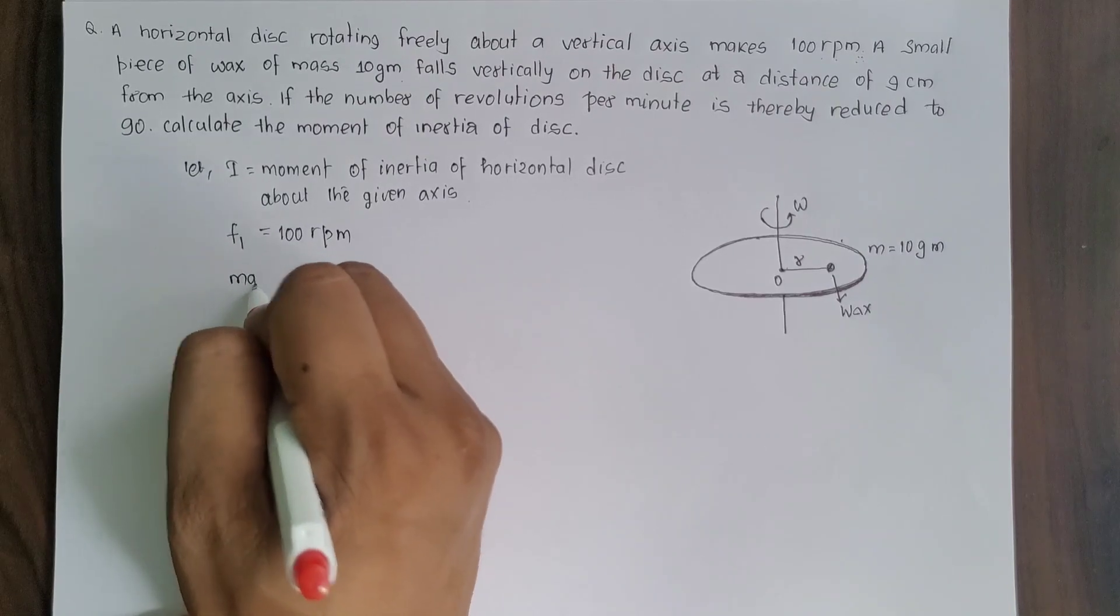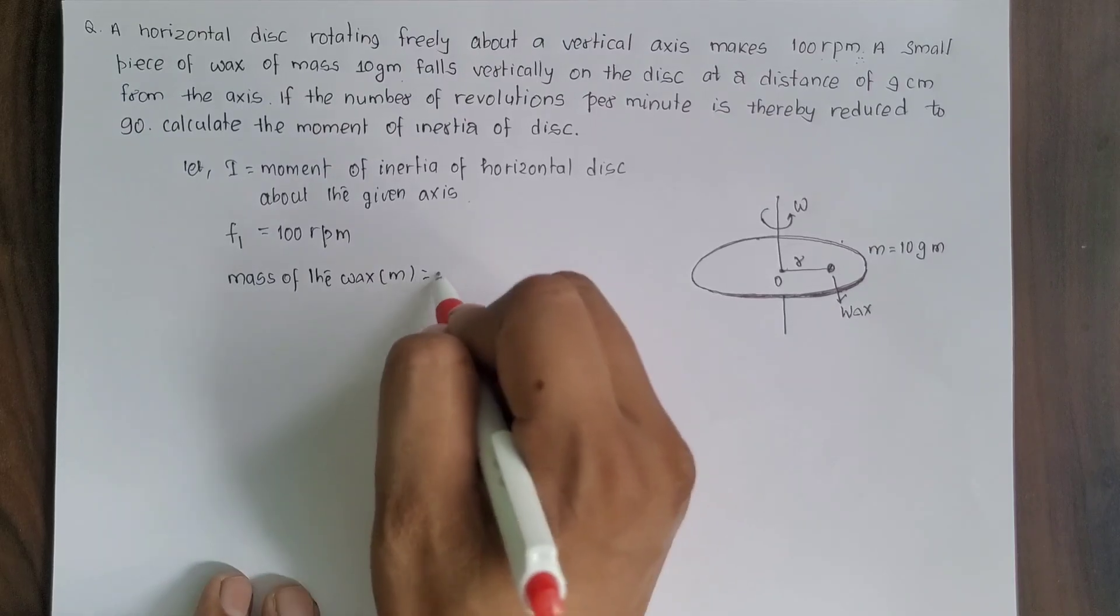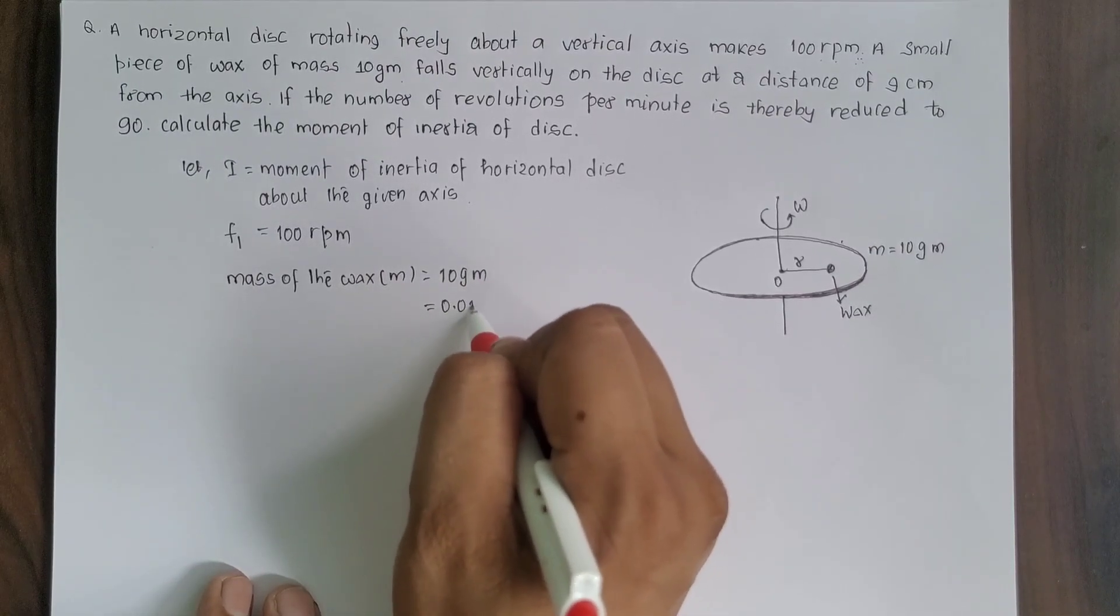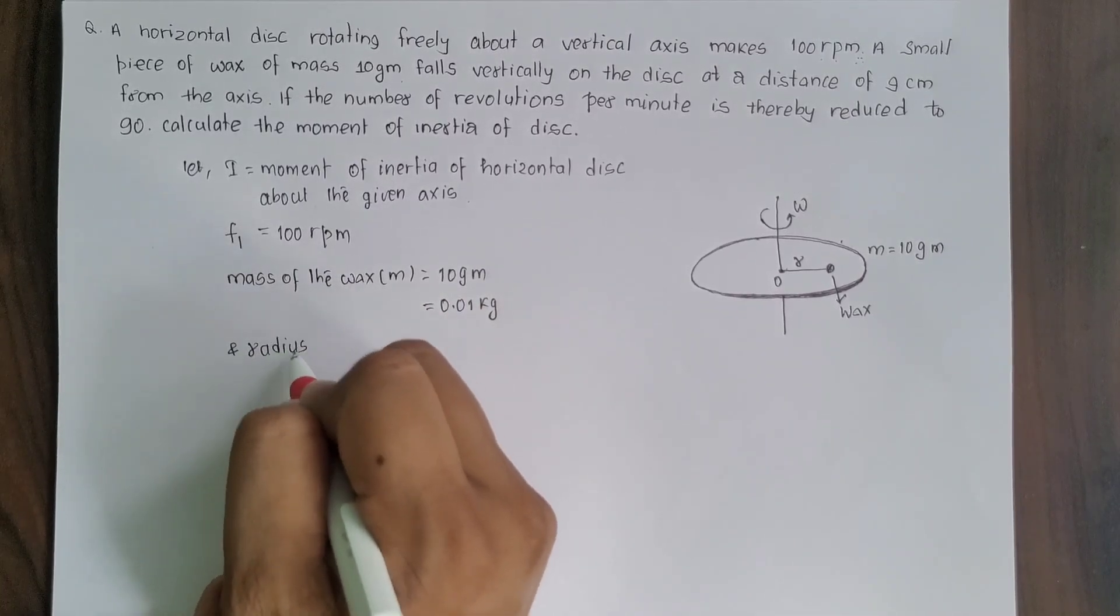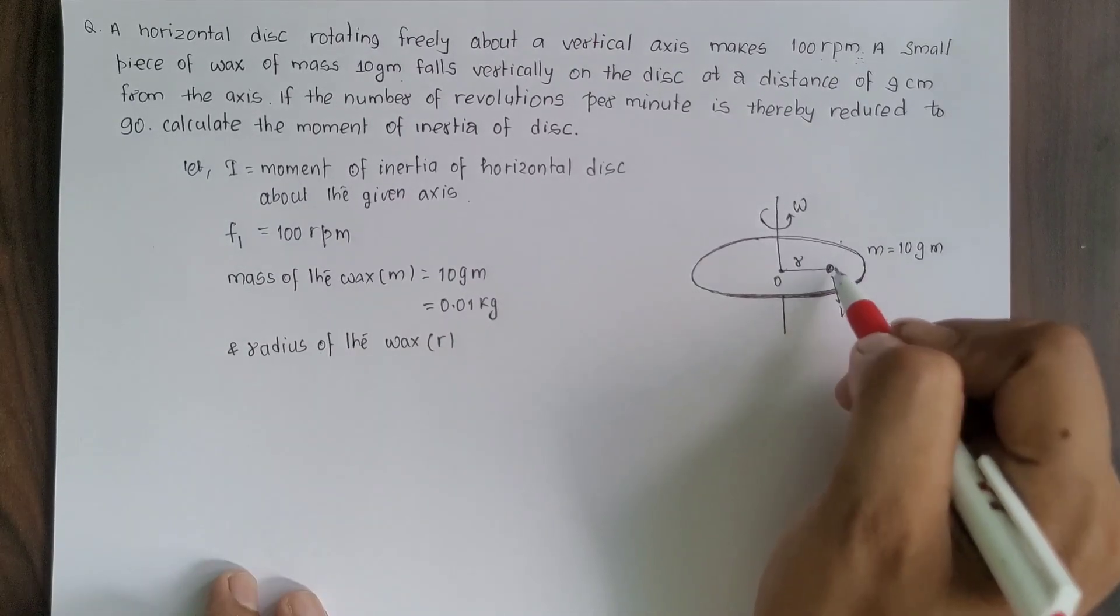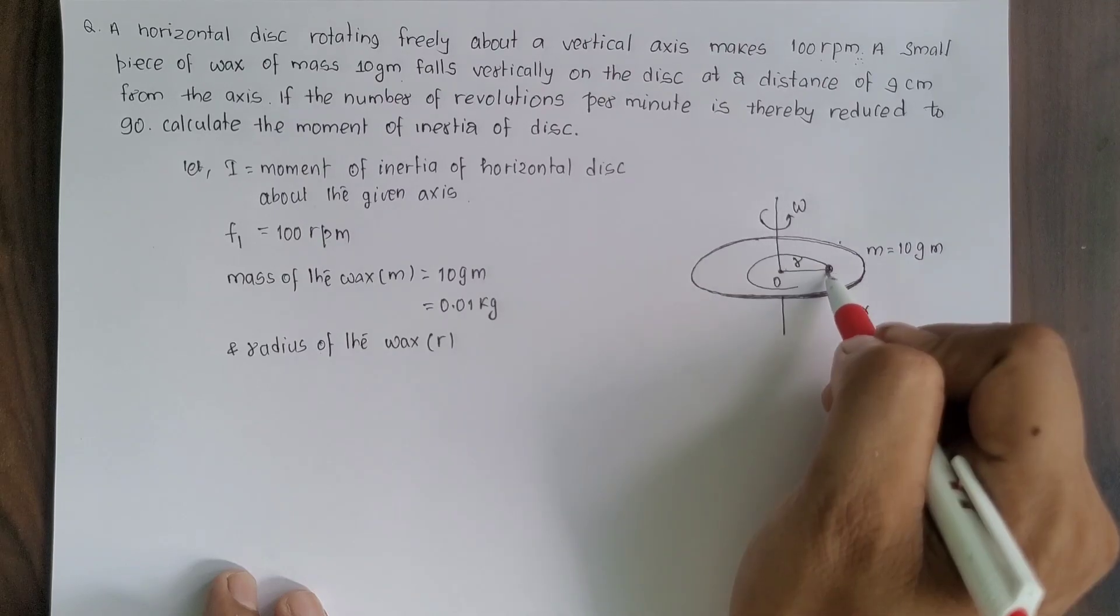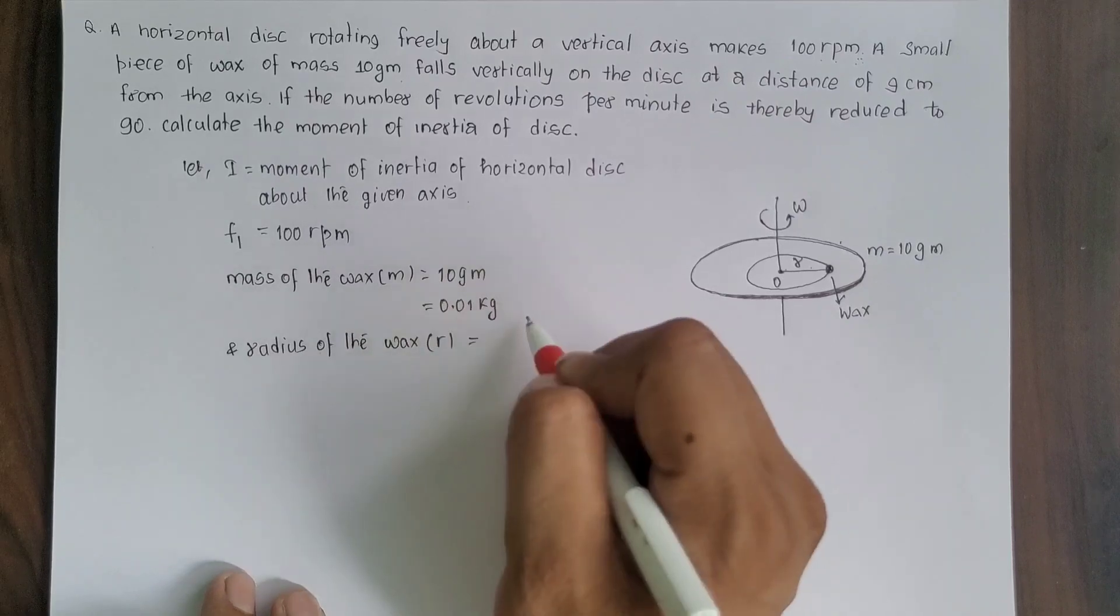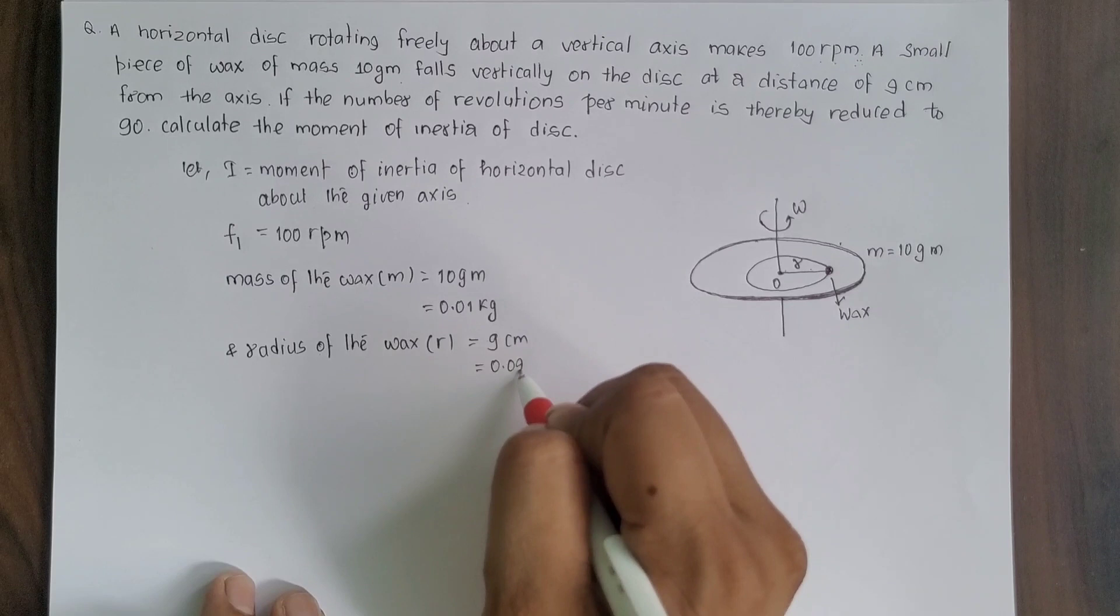Here, mass of the wax M which is equal to 10 gram, that is 0.01 kg, divided by 1000. The disc rotates in circular path with radius r equal to 9 cm, which is 0.09 meter.